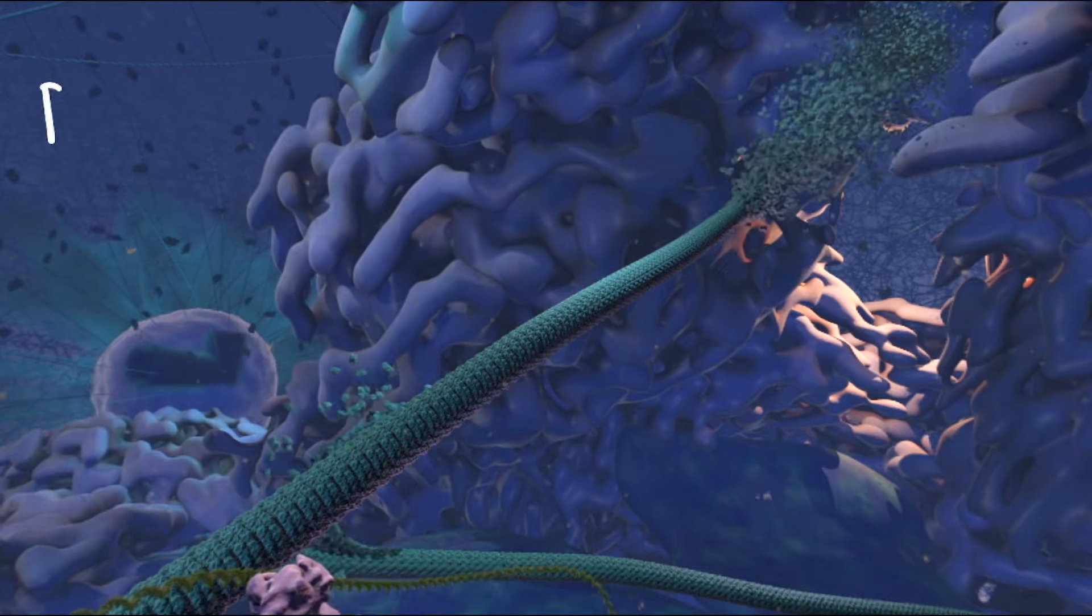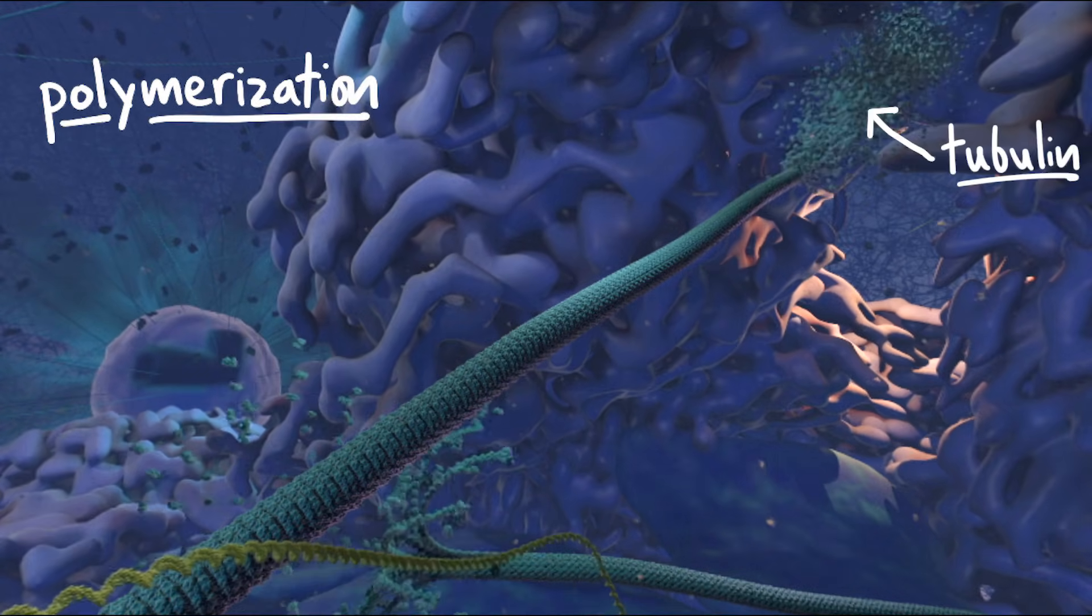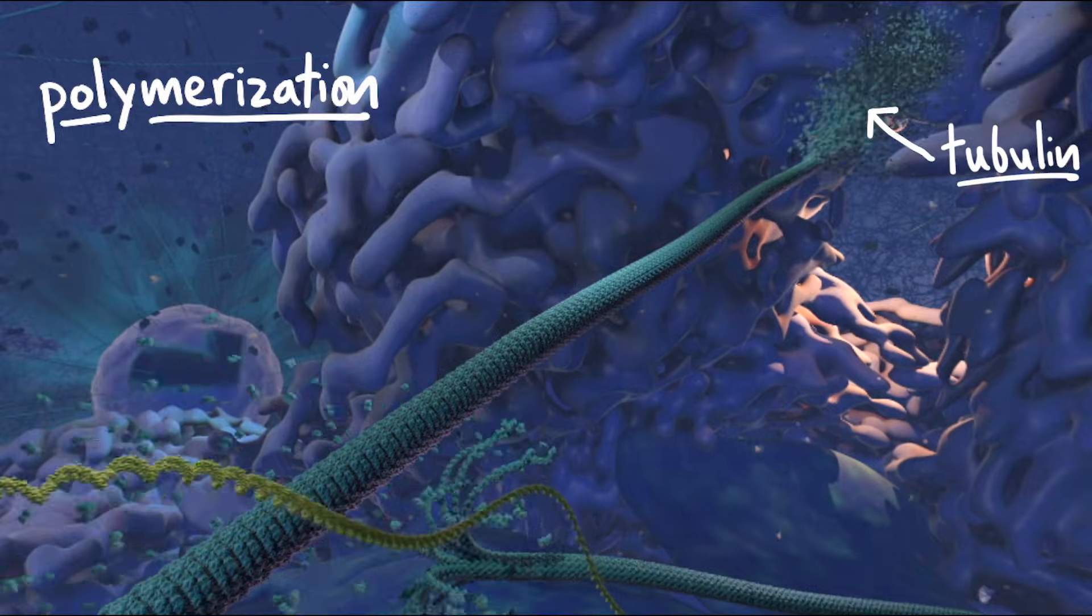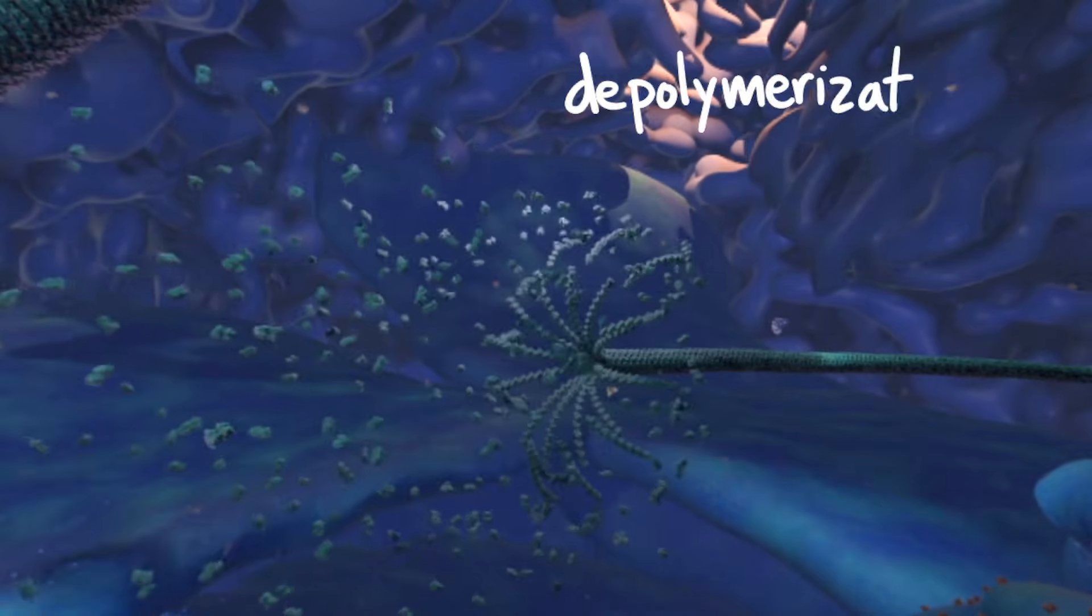This is a process called polymerization. The small things they're made up of are proteins called tubulin. Here's a microtubule that's coming apart or depolymerizing.